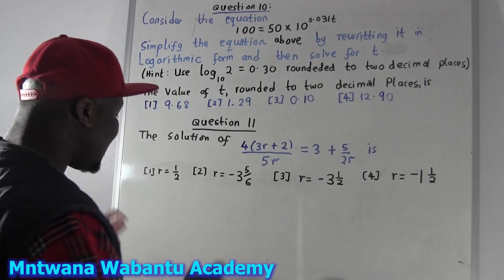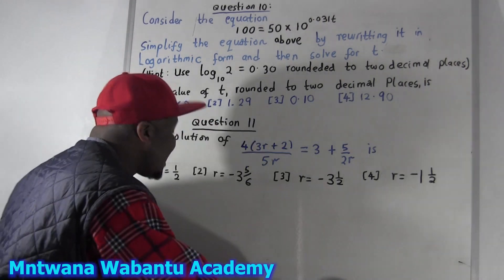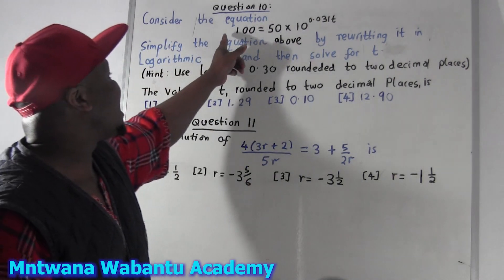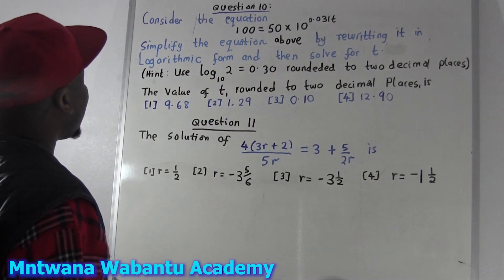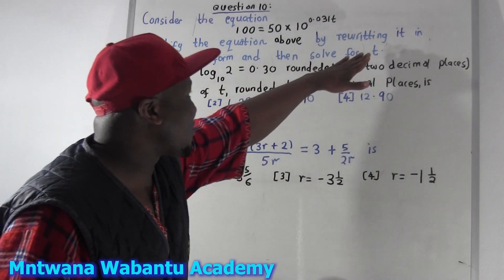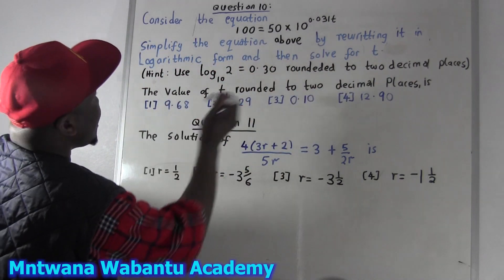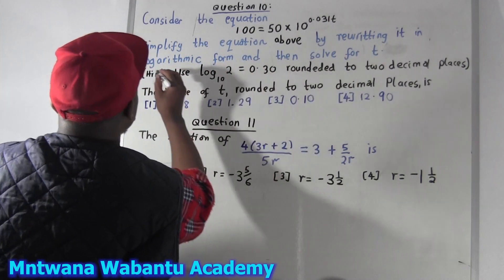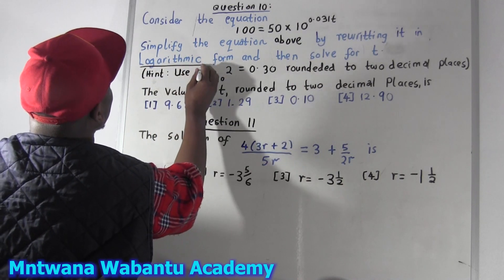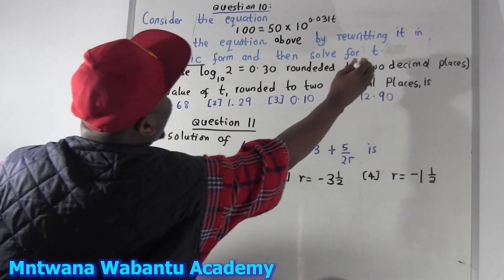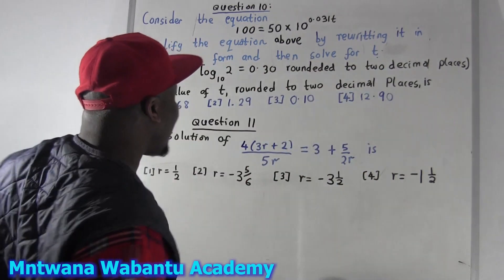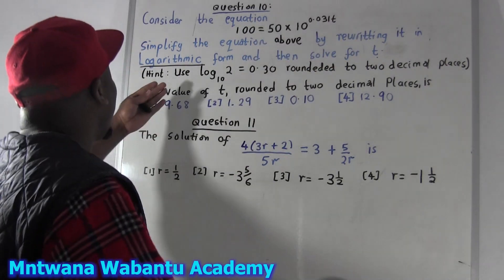So we have this question right here. This is one of the easy questions. They say consider the question — this is the question. Now they say simplify the question by rewriting it in logarithmic form and then solve for T. Easy. Don't worry about the other stuff — I feel like it's a waste of time.